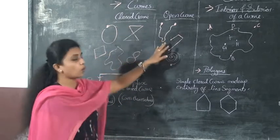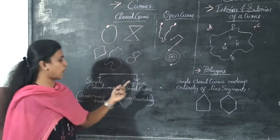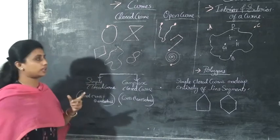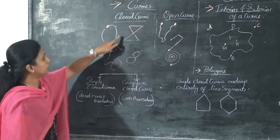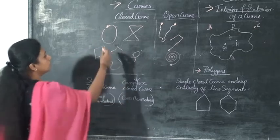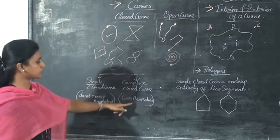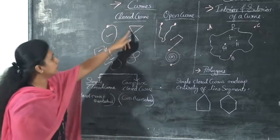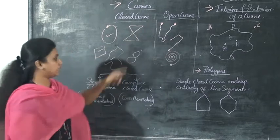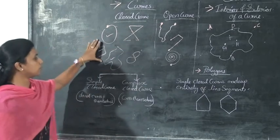So these are the 2 types of curves: closed curve and open curve. But this closed curve is again divided into 2 types — simple closed curve and complex closed curve. Simple closed curve means the starting point and end point are the same, but they do not cross themselves. Complex closed curve means that the curve crosses itself. So this is the complex closed curve and this one is the simple closed curve.